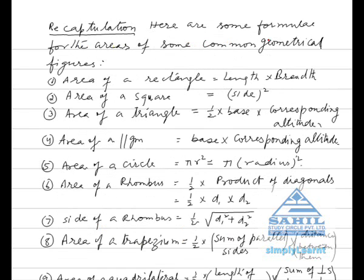Recapitulation: Here are some formulae for the areas of some common geometrical figures. Number 1: area of a rectangle is equal to length into breadth. Number 2: area of a square is equal to side squared.